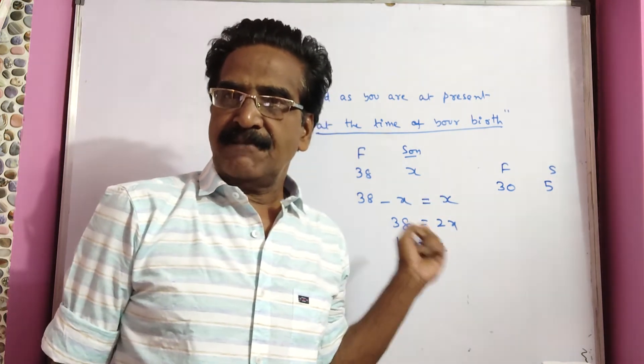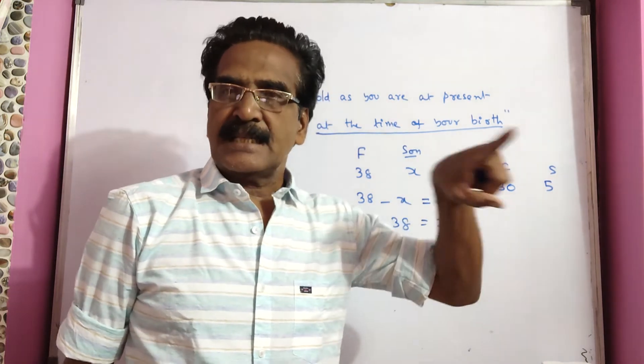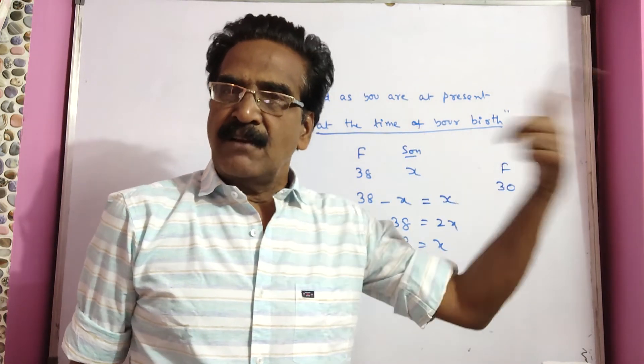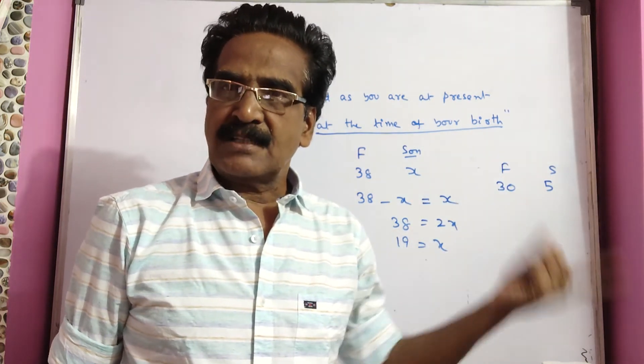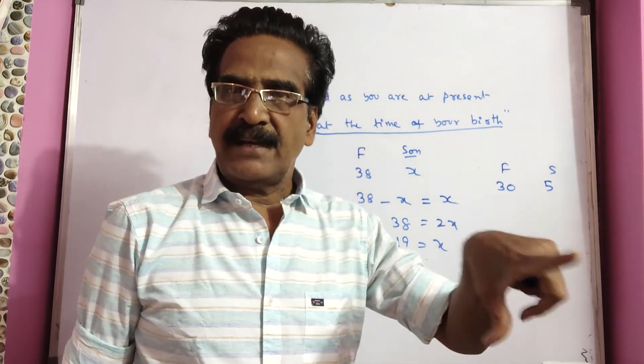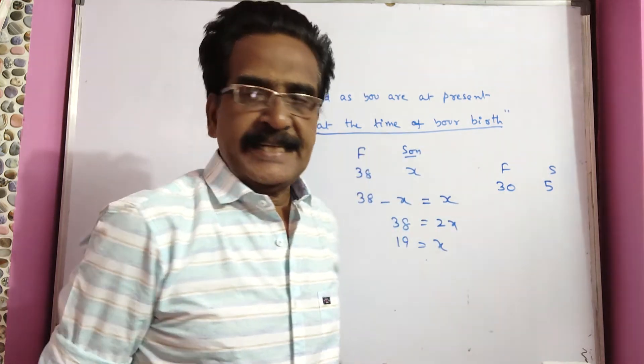So x equals 19. This is the present age of the son. So the son's age 5 years back was 19 minus 5, which is 14 years.